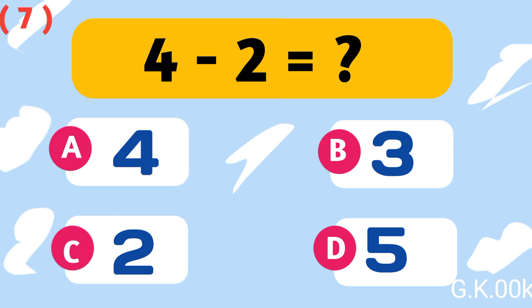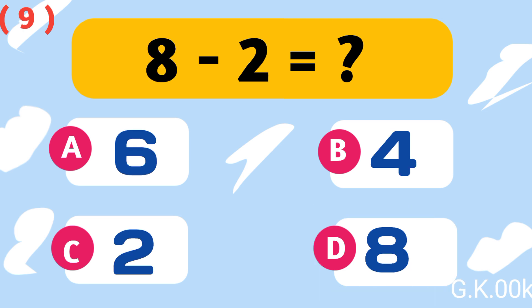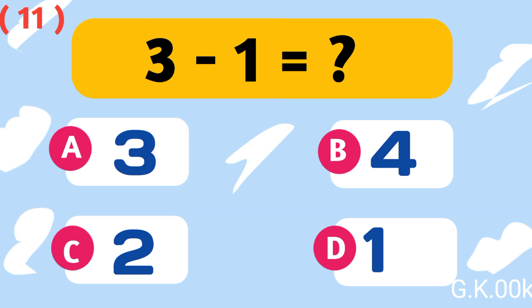4 minus 2 equals 2. 7 minus 5 equals 2. 8 minus 2 equals 6. 1 minus 0 equals 1.